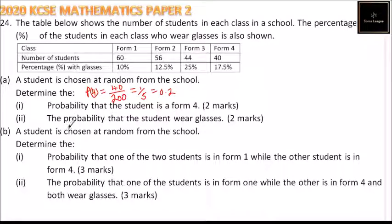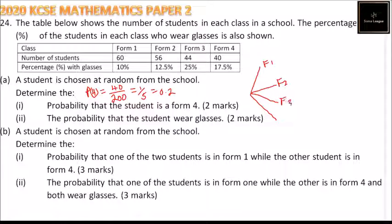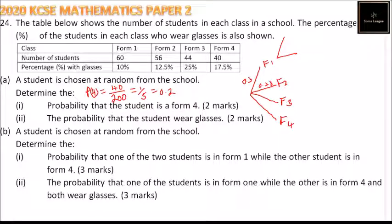Part 2: the probability that the student wears glasses. Let's draw a tree diagram to make the calculation easier. A student could be in Form 1, Form 2, Form 3, or Form 4. The probabilities are: Form 1 = 60/200 = 0.3, Form 2 = 56/200 = 0.28, Form 3 = 44/200 = 0.22, and Form 4 = 40/200 = 0.2.